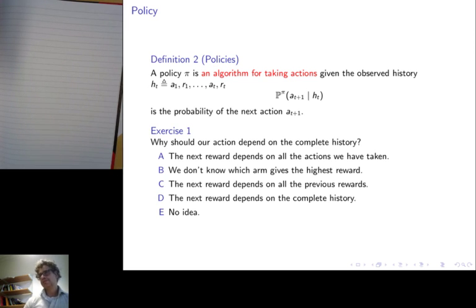Now, we'll see later that in terms of the actual problem, it is that this thing is the important part. We don't know which arm has the highest reward. This is definitely not true directly. And this one is also not true directly. However, if we think about what we know about the problem, our knowledge of the problem, in that sense, the next reward that we expect to get will depend on the complete history, which is different from the actual reward.